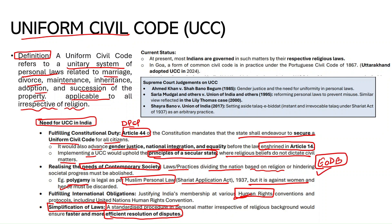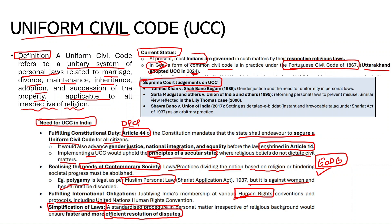Regarding the current status of UCC: most Indians are currently governed by their respective religious laws in personal matters like marriage and inheritance. In Goa, a form of common civil code is in practice in line with the Portuguese Civil Code of 1867. Recently in 2024, Uttarakhand adopted UCC. The Supreme Court, in cases like Shah Bano Begum, Sarla Mudgal, and Sariban Banu, has upheld the validity of UCC and advocated for its implementation.